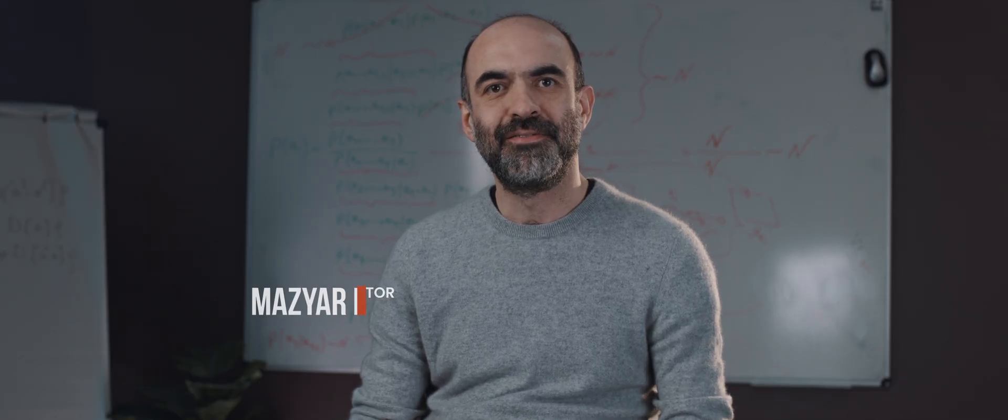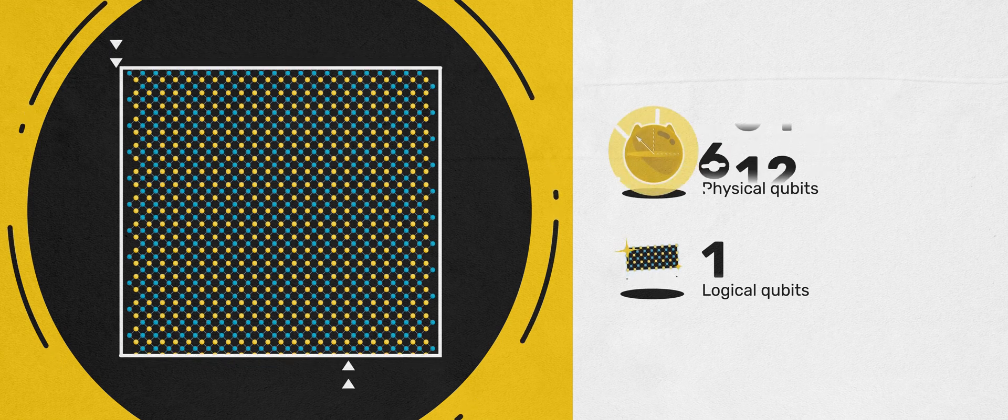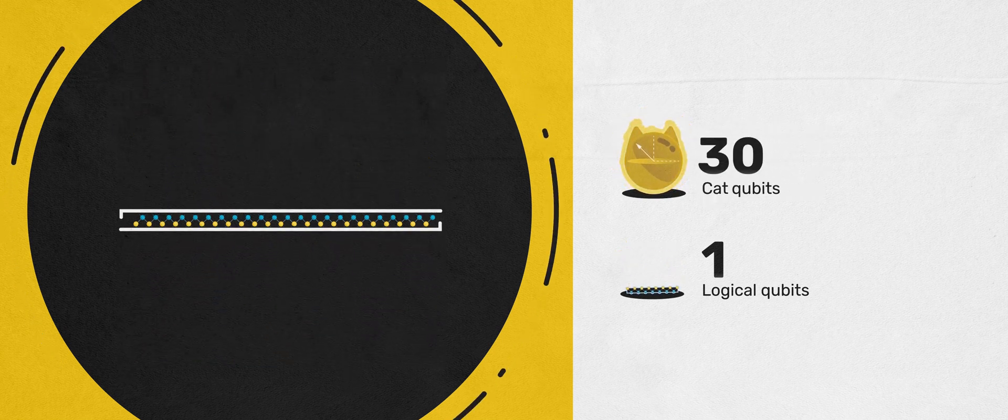Cat qubits offer a distinct advantage over standard qubits. They are protected against one dimension of noise by design, so we are left with only one dimension to be corrected. This makes error correction much, much simpler.